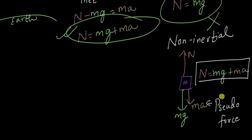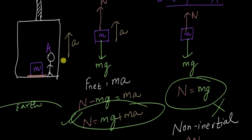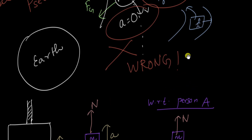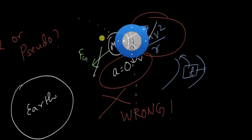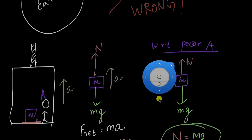In which frames do we need to apply pseudo force? In non-inertial frames — these are the frames where Newton's laws don't work by themselves, and these are generally the frames where the observer is accelerating. Now we can come back to our original case of looking at a body undergoing circular motion — for example, the moon.